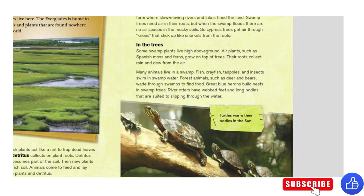Many animals live in a swamp: fish, crayfish, tadpoles, and insects swim in swamp water. Forest animals, such as deer and bears, wade through swamps to find food. Great blue herons build nests in swamp trees. River otters have webbed feet and long bodies that are suited to slipping through the water.